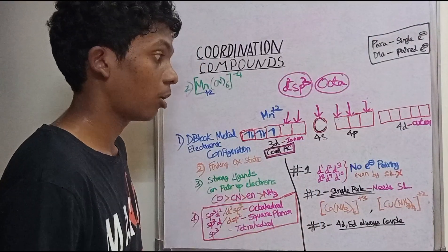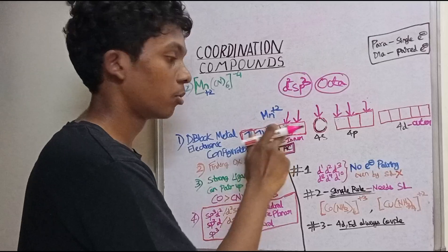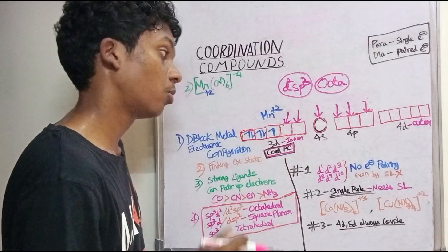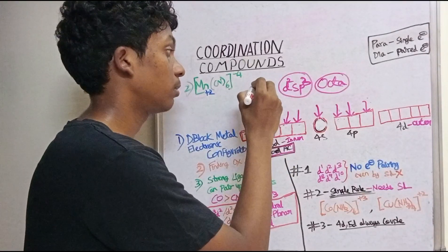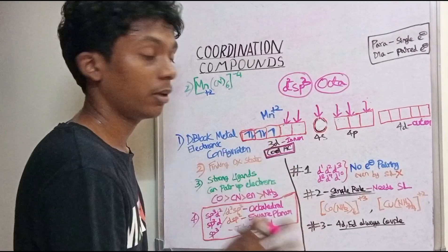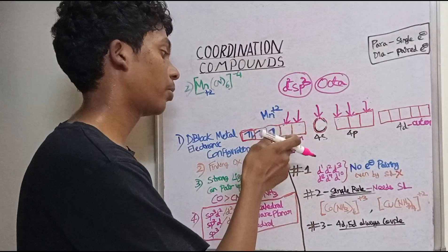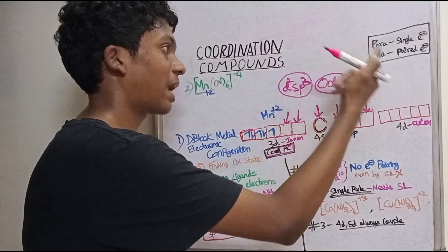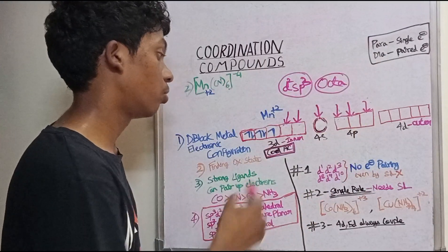This is an inner orbital complex. We then determine whether it is paramagnetic or diamagnetic based on the number of unpaired electrons.